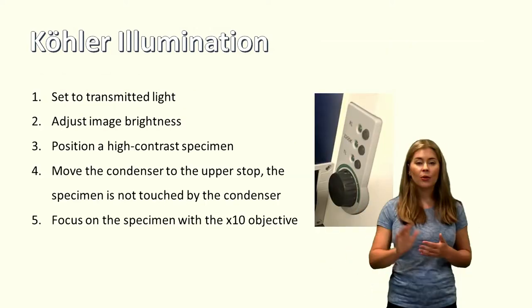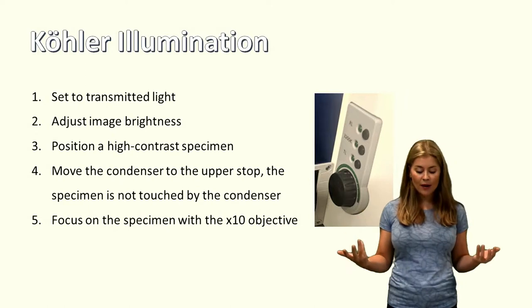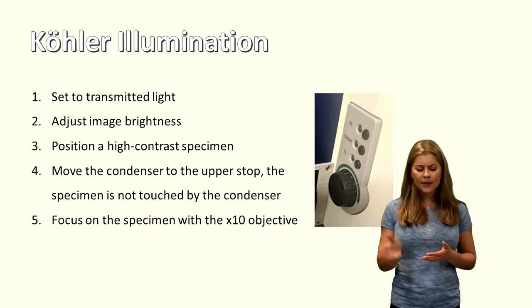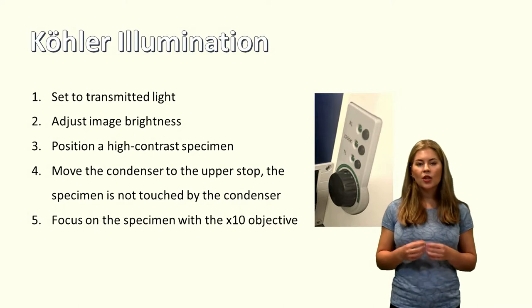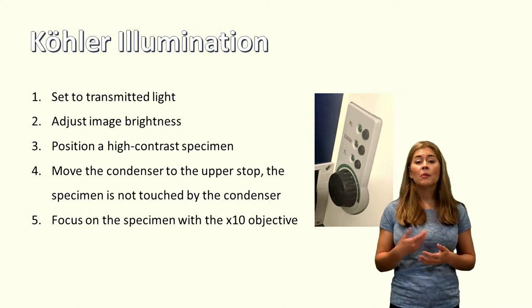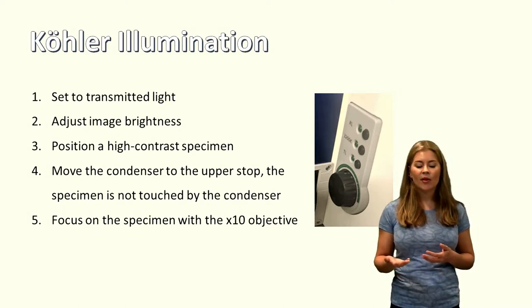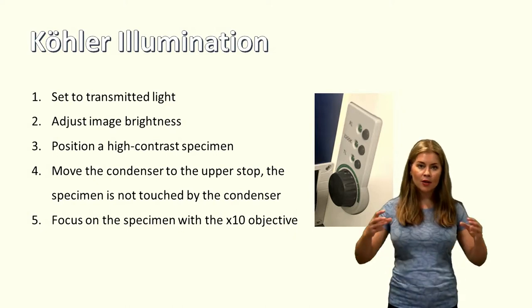So how do we do this? We want to use transmitted light, because we're using bright field. Adjust the image brightness, so you want to start at around 50%. You position a high contrast specimen, so something that would be usually very easy to see underneath the microscope. Then you're going to move the condenser to the upper stop, so you're going to wheel all the way up.